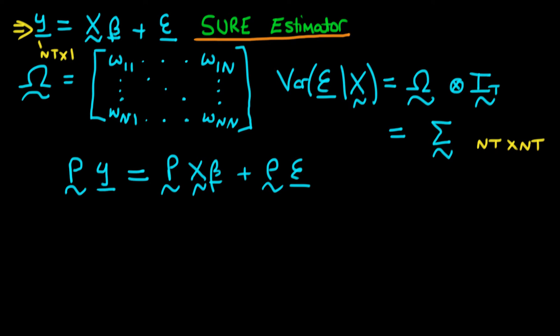And at this point it becomes prudent to define some other variables such that we can write our system a little bit more compactly. So if I define a new dependent variable Z, which is equal to P times Y, if I define a new matrix of independent variables omega, which is equal to P times X, and then finally if I define a new error, let's call it U, which is equal to P times epsilon.